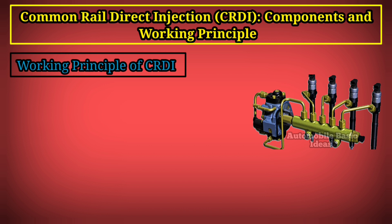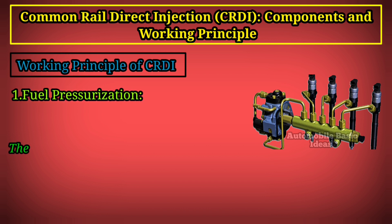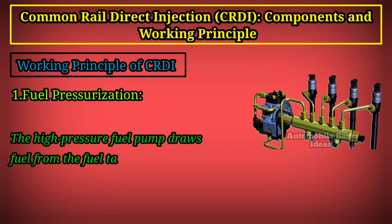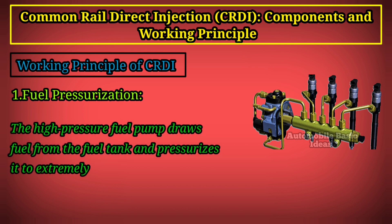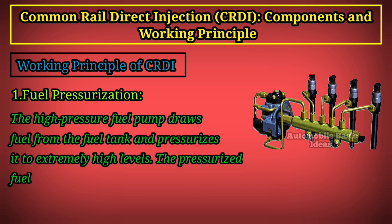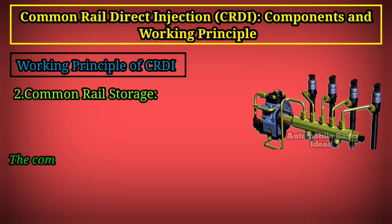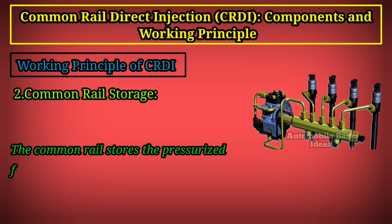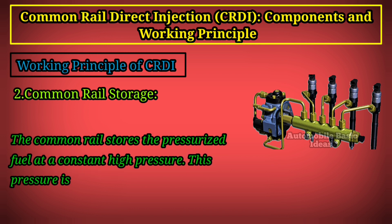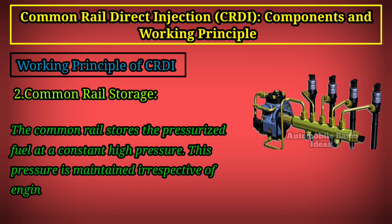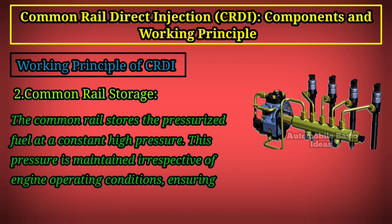Working principle of CRDI. Step 1 — Fuel Pressurization: the high-pressure fuel pump draws fuel from the fuel tank and pressurizes it to extremely high levels. The pressurized fuel is then sent to the common rail. Step 2 — Common Rail Storage: the common rail stores the pressurized fuel at a constant high pressure.